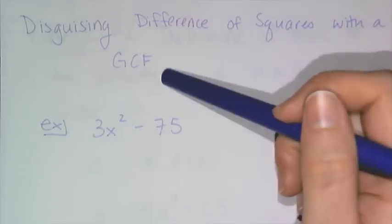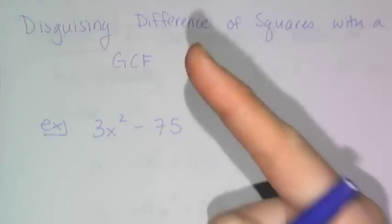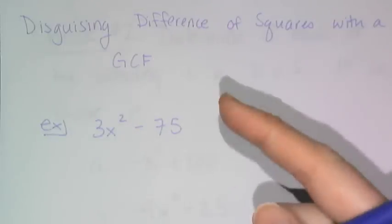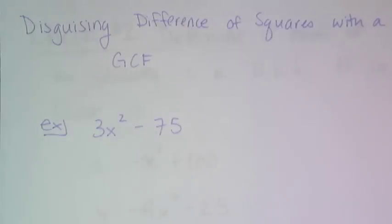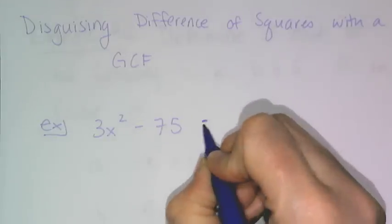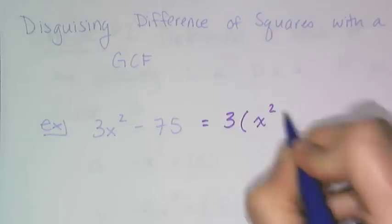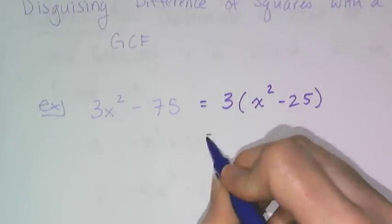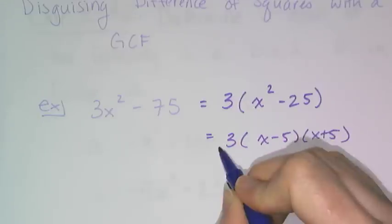I can disguise a difference of squares with a greatest common factor. Whenever you see two terms and a difference, that's a clue it could be a difference of squares — just disguised. For instance, 3x squared minus 75: 3 is not a square and 75 is not a square, but if I factor out the GCF of 3, I get x squared minus 25, which is a difference of squares. So it factors as 3 times (x minus 5)(x plus 5).